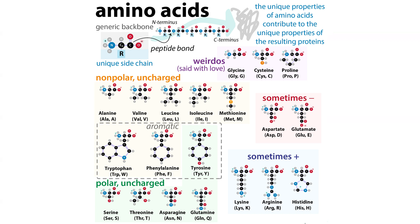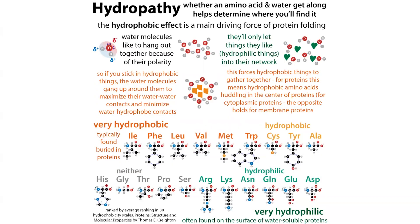If you change an amino acid to something similar, that's a conservative mutation, and it's less likely to have a large effect. In contrast, a drastic change — such as swapping a very hydrophobic amino acid that typically sits in the center of a protein for something hydrophilic that likes to be on the surface, or vice versa — would be a non-conservative mutation with potentially major consequences.